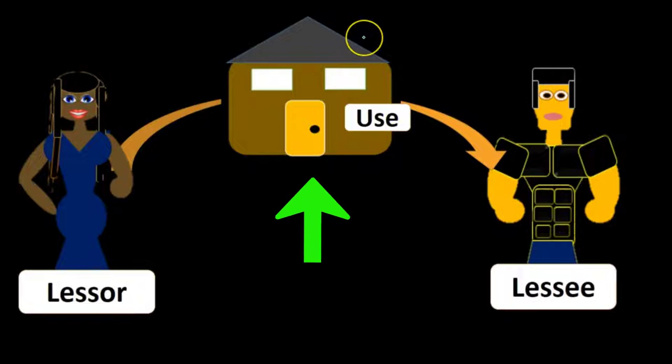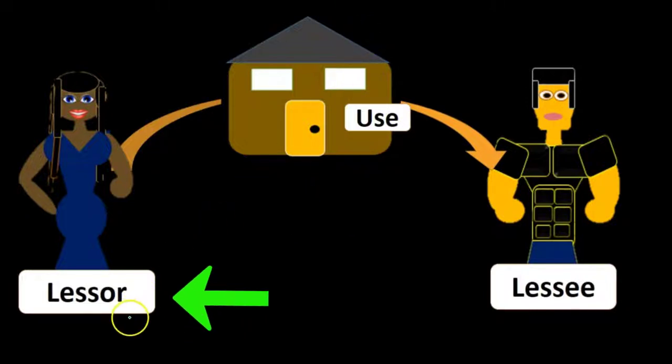We have the home being the piece of property that will be leased. We have the lessor who owns the property, who is going to let someone else use the property, the lessee, and have the use of that property. However, not the ownership of the property.